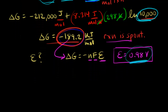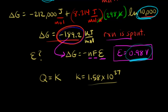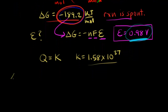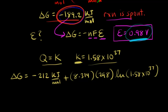What happens at equilibrium? At equilibrium, Q equals K. At 25 degrees C, K equals 1.58 times 10 to the 37th — that's the equilibrium constant for this reaction. Let's plug K into our equation for delta G: delta G equals delta G zero, negative 212 kilojoules per mole, plus R (8.314) times T (298 K) times the natural log of K, which is the natural log of 1.58 times 10 to the 37th.